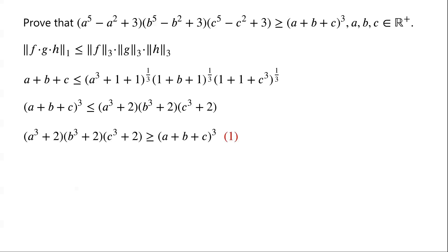That is, (A³ + 2)(B³ + 2)(C³ + 2) ≥ (A + B + C)³. We can see that the right side of this inequality is the same as the right side of the original inequality. So if we prove that the left side of the original inequality is greater than or equal to the left side of inequality (1), then we prove the original inequality holds.